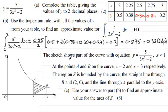We now have the next part which shows us this sketch. The sketch shows part of the curve, then, with the equation y equals 5, all divided by 3x squared minus 2, for values of x greater than 1. Now, at the points A and B on the curve, x equals 2 and x equals 3, respectively. The region S is bounded by the curve, the straight line through B and 2, 0, and the line through A parallel to the y-axis. And for part C, then, we've got to use your answer to part B to find an approximate value for the area of S for three marks.